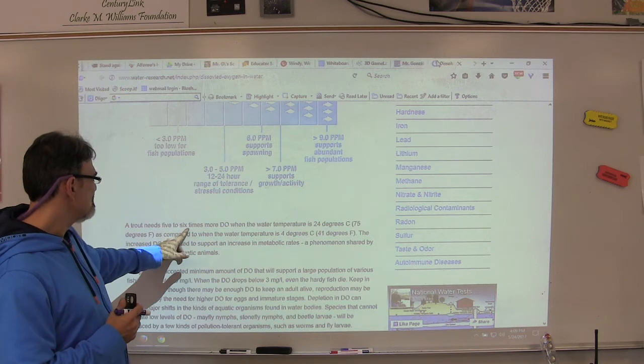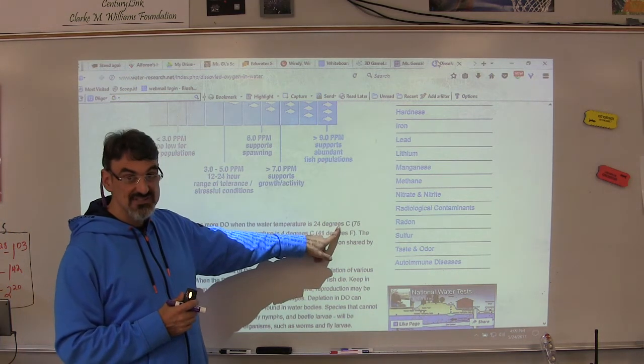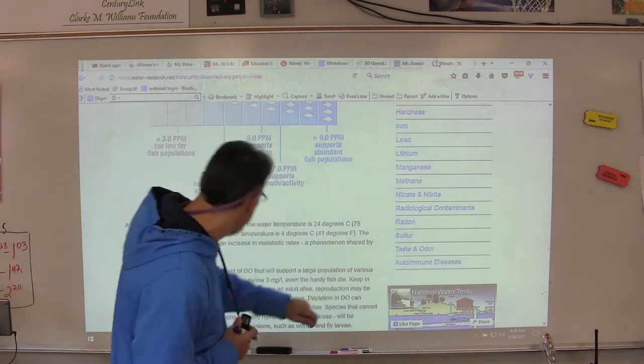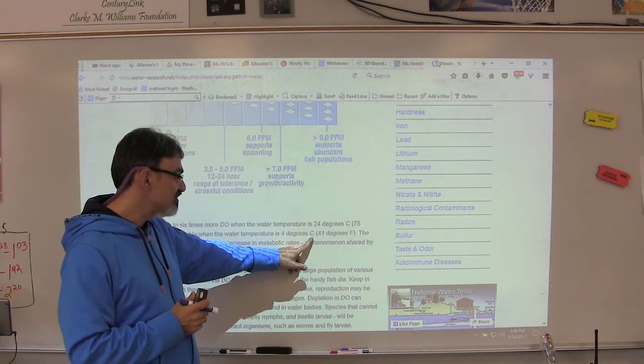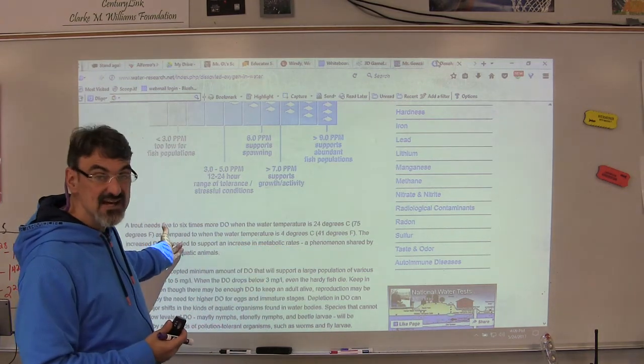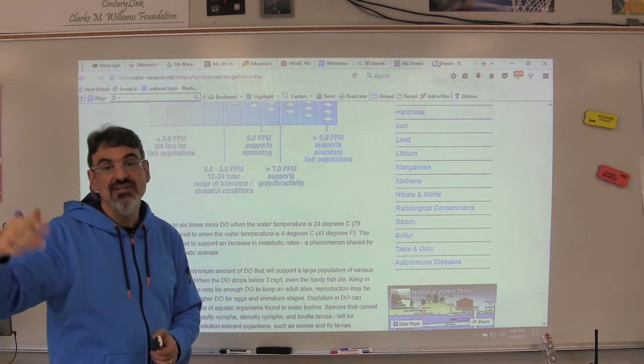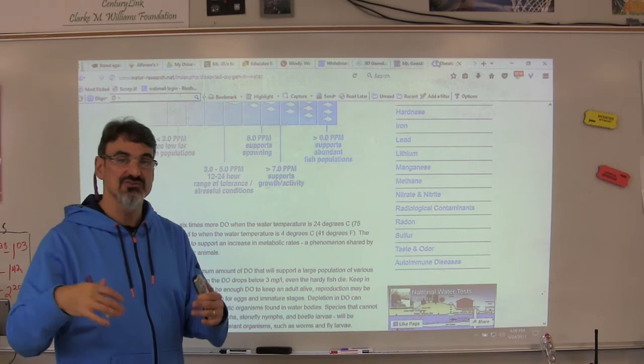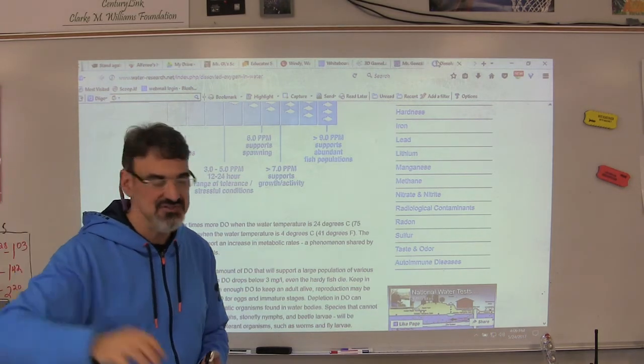A trout needs five to six times more DO when the water temperature is 24 degrees Celsius, which is 75 degrees Fahrenheit, as compared to when the water temperature is 4 degrees Celsius or 41 degrees. Five to six times more. So over the summer, if there's fish in our creek they're suffering. They need way more DO. And the water level goes down because we're not getting as much rain. So summer really impacts our creek's fish.